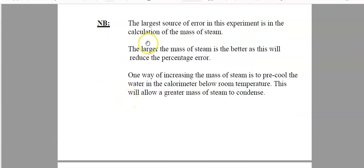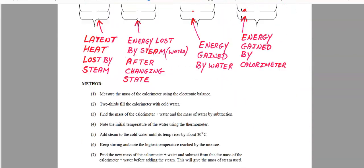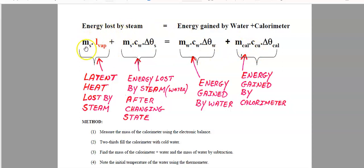The largest source of error in this experiment is the calculation of the mass of the steam — it will be the smallest figure you put into the equation. The larger the mass of the steam, the better, because larger numbers reduce percentage errors. One way of increasing the mass of the steam is to pre-cool the water in the calorimeter — that is a second advantage of pre-cooling. If you pre-cool, you can add more steam, a greater mass of steam. Going back to our formula, the smallest value you put in is the mass of the steam, so the larger that number, the more you reduce your percentage errors. Pre-cooling allows more steam to actually be condensed into the water.